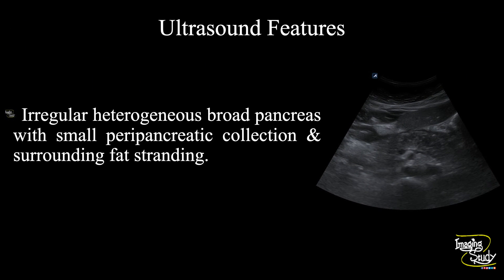So in summary, an irregular heterogeneous broad pancreas is seen with a small amount of peripancreatic collection and surrounding fat stranding. These features conclude it as a case of acute pancreatitis.